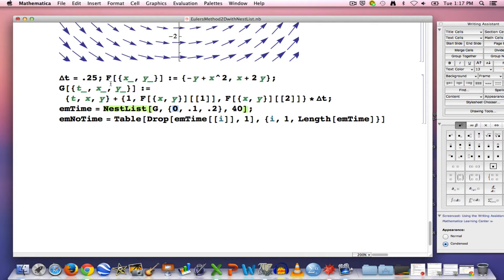And if I want to approximate the solution of the corresponding system of differential equations at time equals 2, based on the fact that I picked delta t to be 0.25, I'd want to go out 8 steps in the iteration, not 40. So I'm going to change this 40 to an 8.